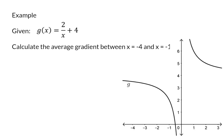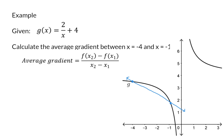Given a hyperbola, the question is to calculate the average gradient between x equals minus 4 and x equals minus 1. Again, average gradient means we draw a line between these two points and calculate the gradient of that straight line. This time I'll calculate the average gradient by immediately substituting into the equation. I'm going to make x1 equal to minus 4 and x2 equal to minus 1. In the denominator I will have minus 1 minus minus 4, and in the numerator I'll first calculate the y value when substituting x with minus 1, which is 2 divided by minus 1 plus 4.